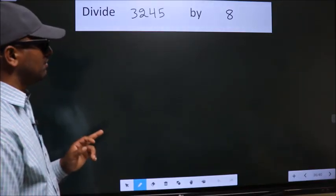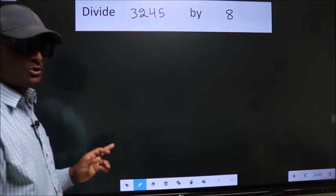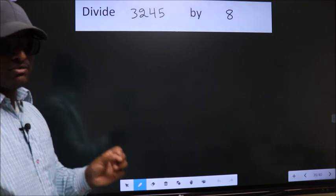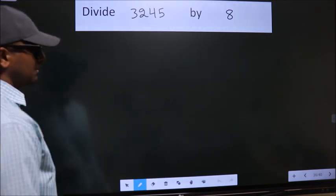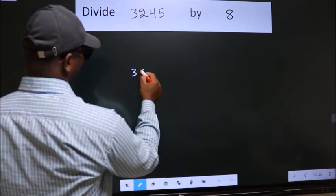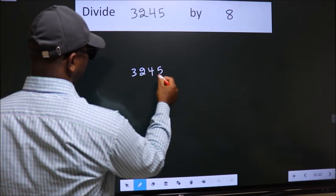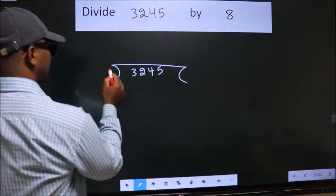To divide 3245 by 8, we should frame it in this way: 3245 here, 8 here.